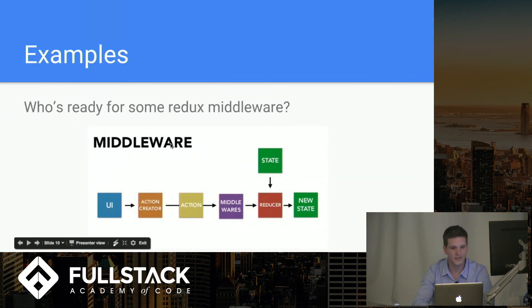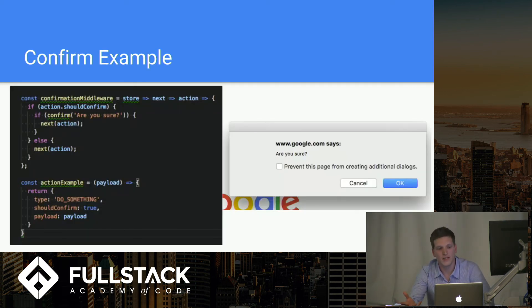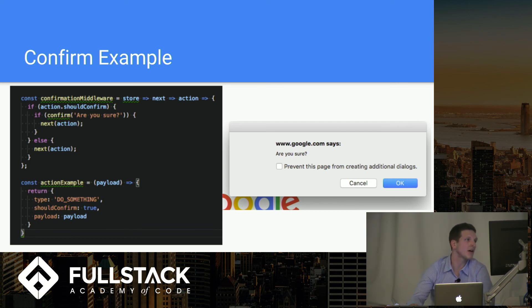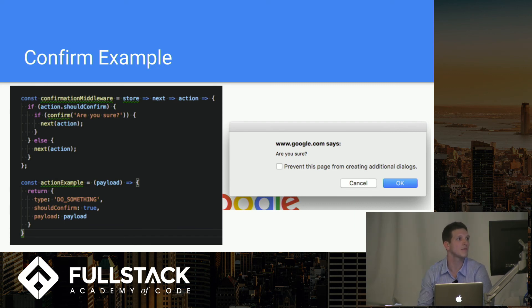My last example really brings home the usefulness of Redux middleware: a confirmation middleware used when deleting something. We've always thought an action has two properties — the action type and the payload — but that's not true. It's an object and it can take any number of properties you want. In this specific example, the action creator takes a 'shouldConfirm' property. Once it gets to the confirmation middleware, it checks if action.shouldConfirm is true and runs window.confirm.